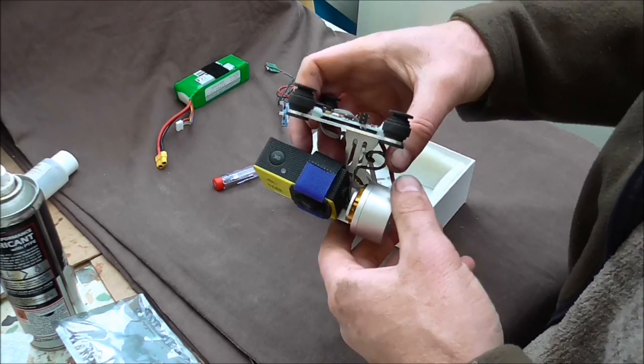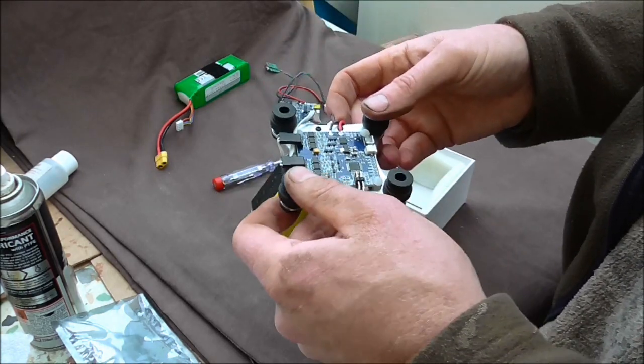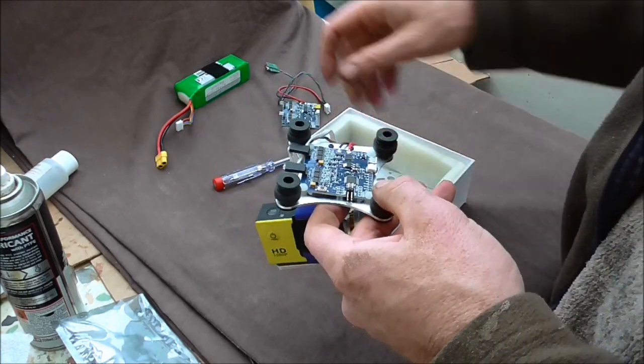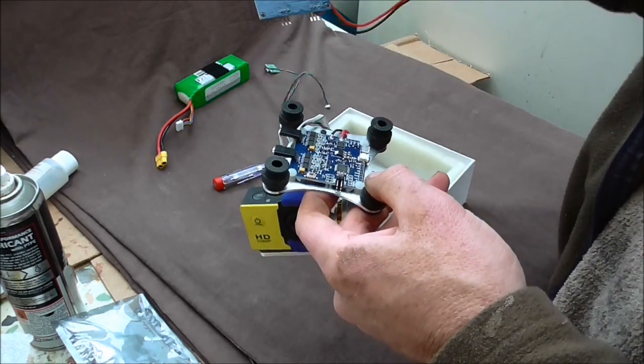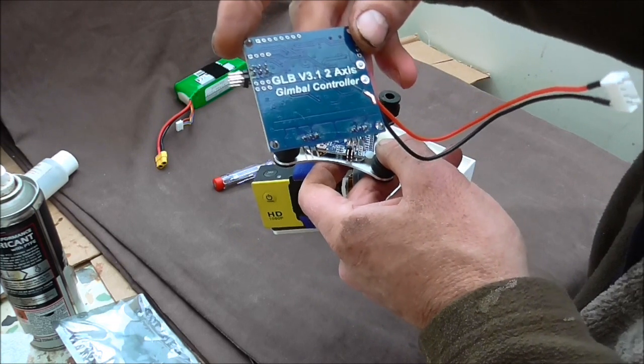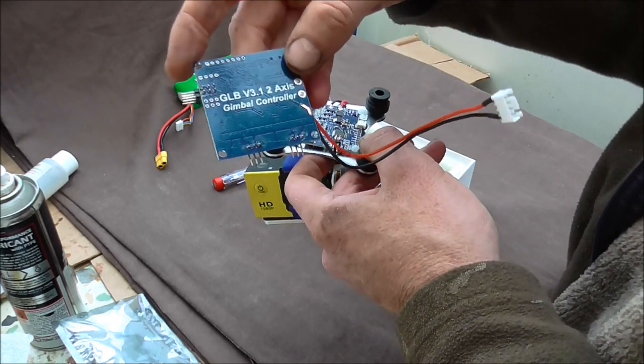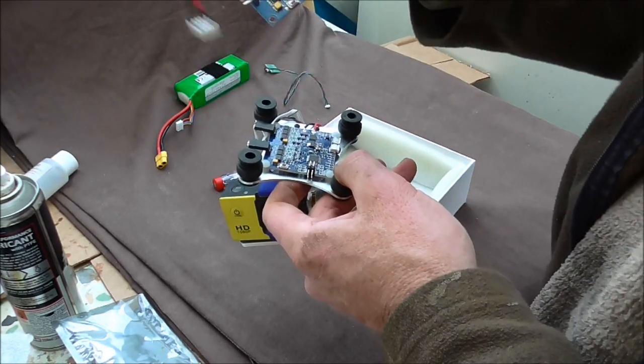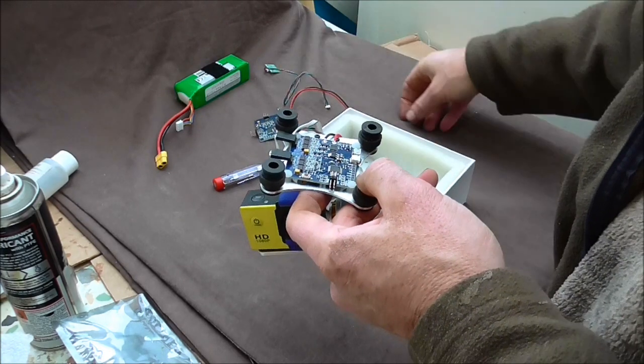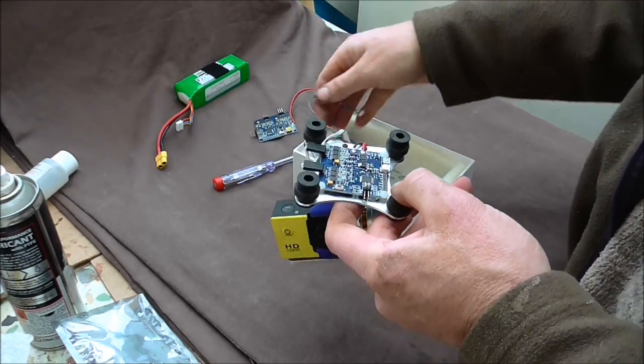And I hope this has been of interest and use to someone else as well who's thinking they've got a gimbal. This is the cheap Chinese brushless gimbal available on eBay. And that's the name of the board: Gimbal controller GLB V3.12 axis, and very simple to replace. I'll put that in there for you as well.